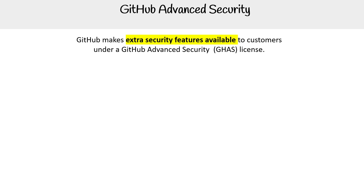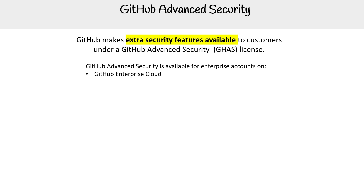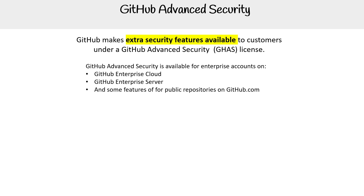GitHub makes extra security features available to customers under a GitHub Advanced Security license. This is available for enterprise accounts on GitHub Enterprise Cloud, GitHub Enterprise Server, and some of the features are available for public repositories on GitHub.